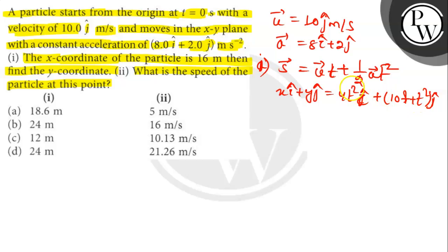Comparing the x and y components of the position, x equals 4 t squared. x equals 16, so t is 2 seconds.